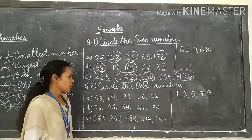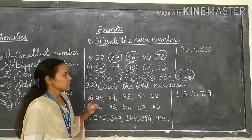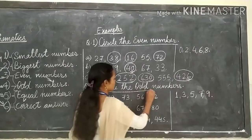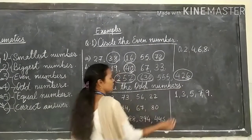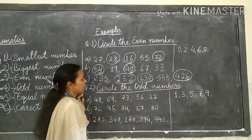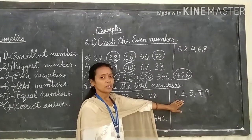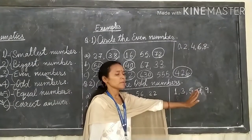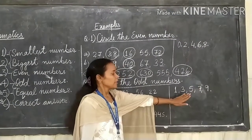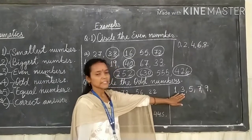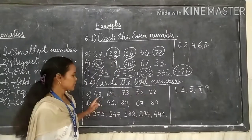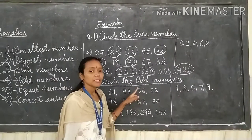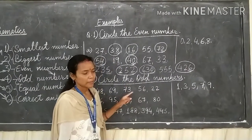Now circle the odd numbers. Question 2 is circle the odd numbers. I have written 5 numbers which are odd numbers: 1, 3, 5, 7, 9. If we find these numbers in the place of 1's, that number will be an odd number.